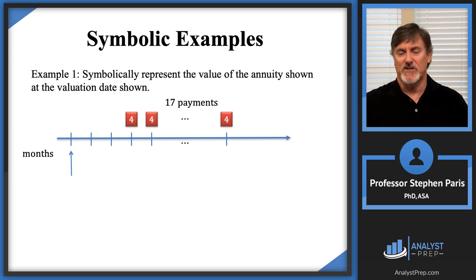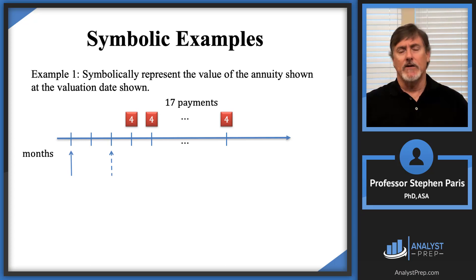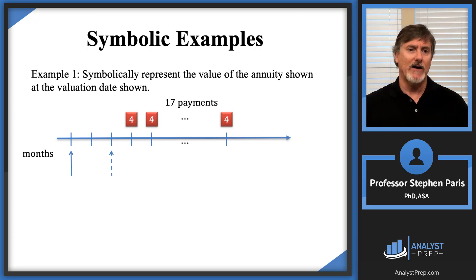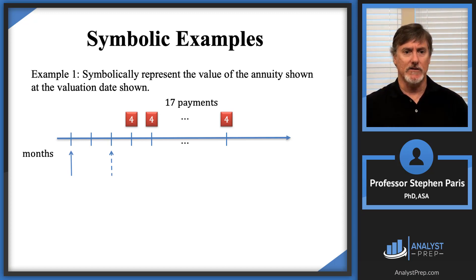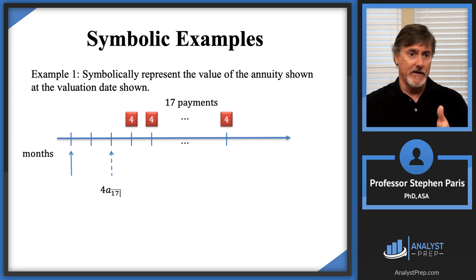I don't have a single symbol that represents the value of the annuity at that valuation date, so I'm going to use an intermediate valuation date. I'll put a dotted line where that intermediate valuation date is. I have a symbol to represent the value of that annuity there — it's 17 payments of four, one period before the first of those payments, so four times A-angle-17.